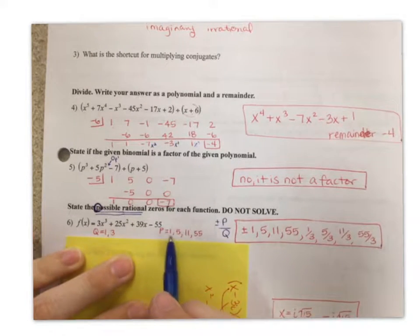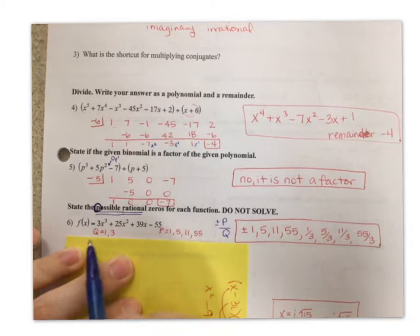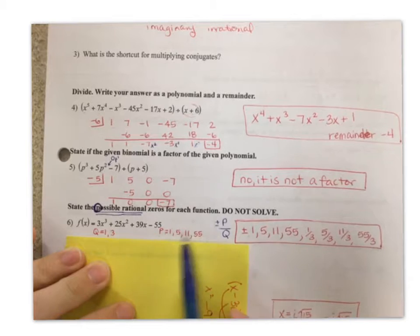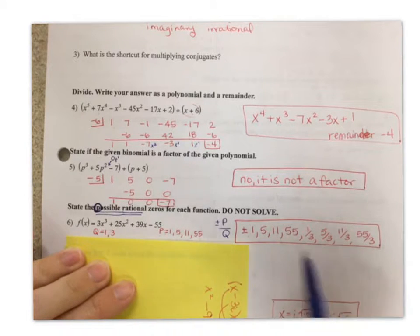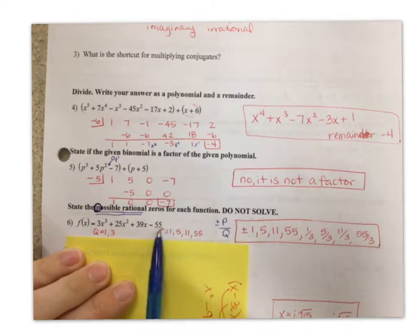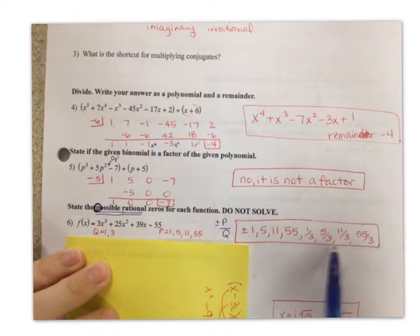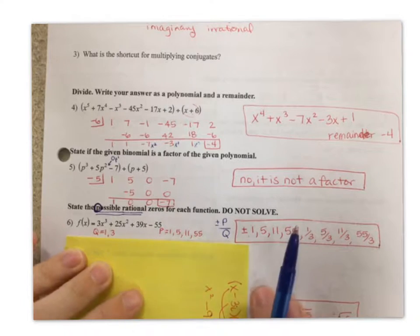So what I do is I take all of my p values, divide by the first q value. So that's where I got all the whole numbers, because if we divide by 1, that just makes whole numbers. Then I take all of my p values and divide by my next q. That's where I'm getting all of these fractions with 3 on the bottom.